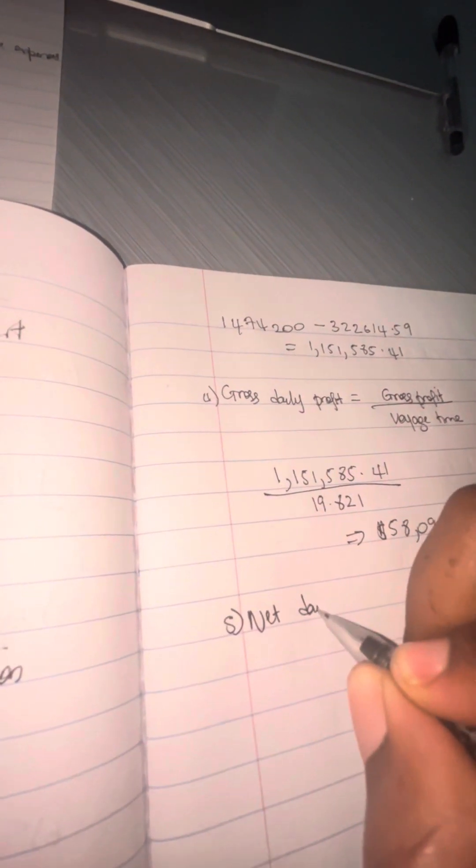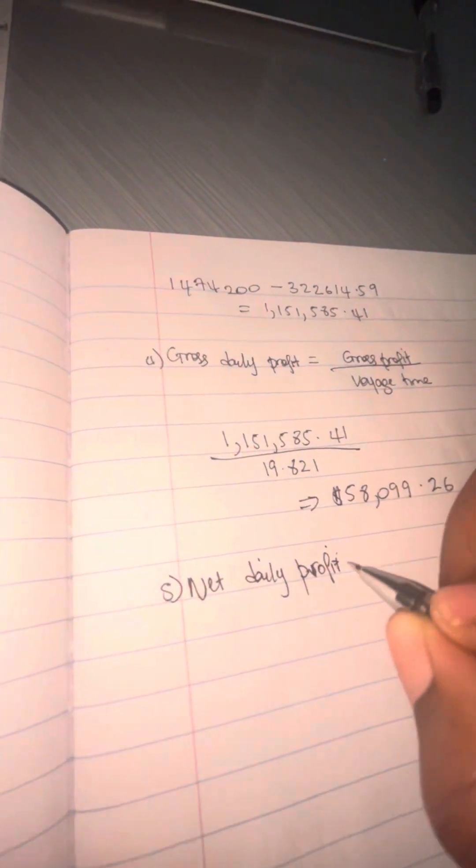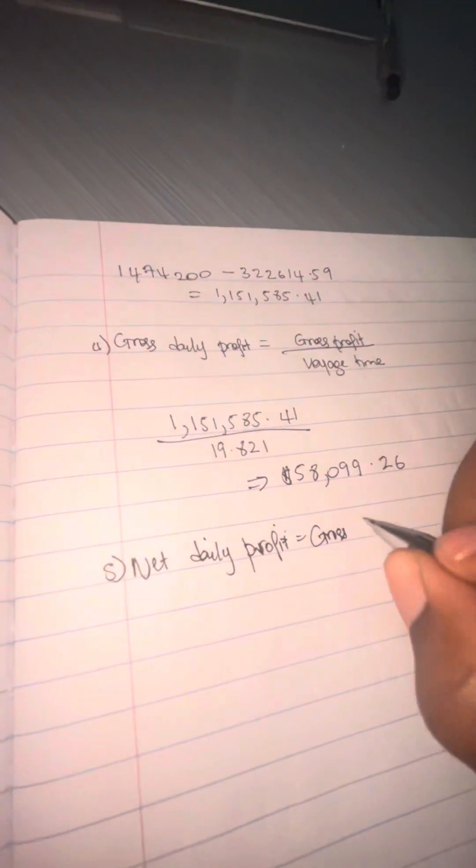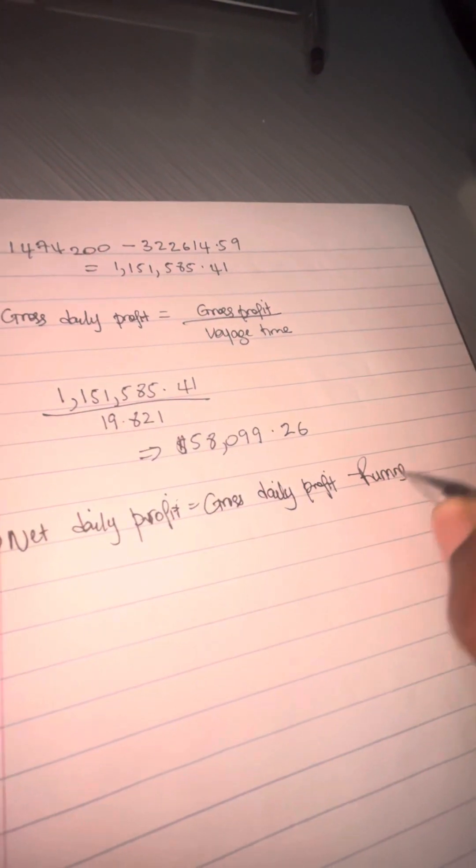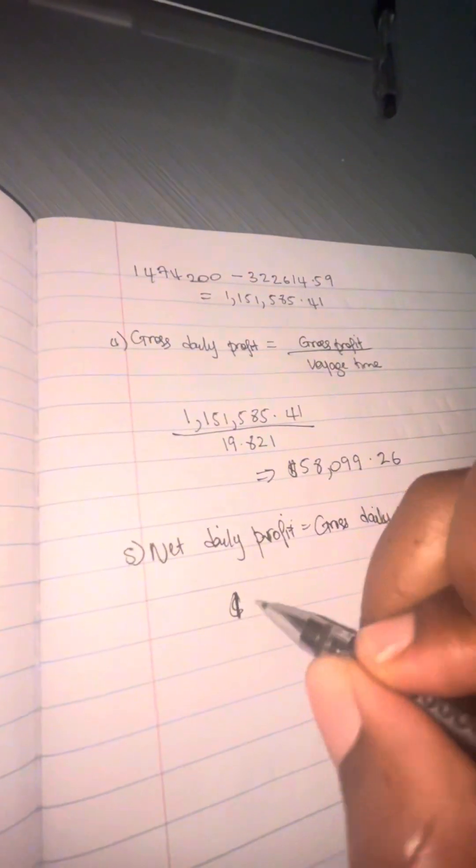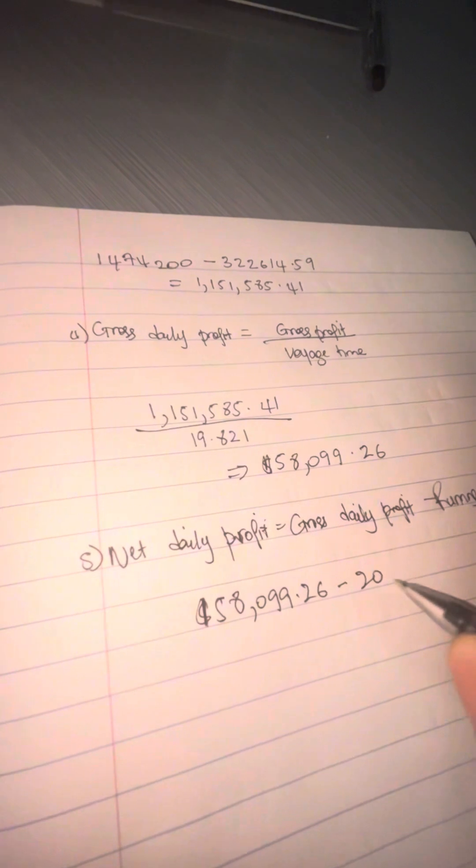Now we do net daily profit, which is gross daily profit minus your running cost. Your running cost is on the question sheet—it's 20,000 dollars. You take that away from your gross daily profit.